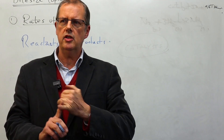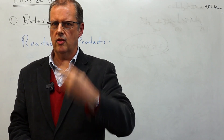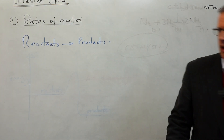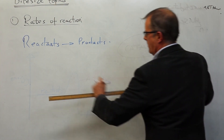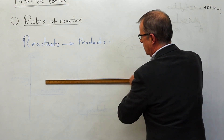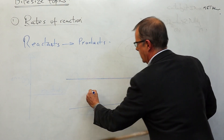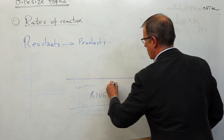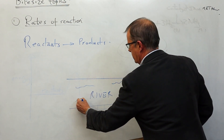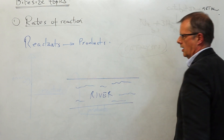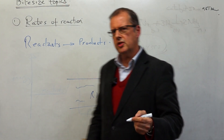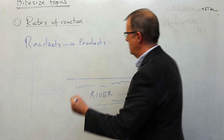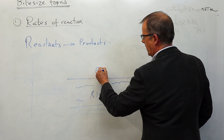Students will say to me: how can you have something happening without the catalyst actually being involved? So I tell them a little analogy. Imagine I've got a fast-flowing river here, and Brooks College has a little outward bound team. They've gone across the countryside and the finishing line is over here.